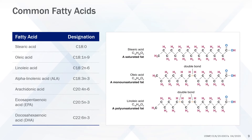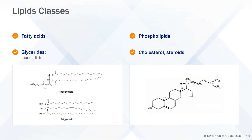On this slide are listed various fatty acids and their designations. Oleic acid has 18 carbons, one double bond, and the double bond is on the ninth carbon from the N-terminal. Linoleic acid has 18 carbons, two double bonds, and the first double bond is on the sixth carbon from the N-terminal, and is designated a C18:2 N6 fatty acid.